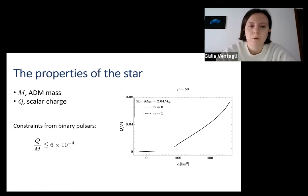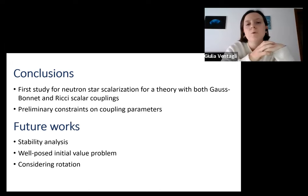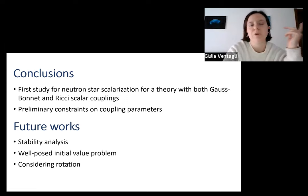In summary, what we did was study spontaneous scalarization for neutron stars for the first time for a theory that contained both the Gauss-Bonnet and the Ricci scalar couplings, which was never done before because so far people just considered either the Gauss-Bonnet theory or Ricci scalar couplings. We were able to put some preliminary constraints on the coupling parameters simply by consideration on the parameter space or on the properties of the neutron star.